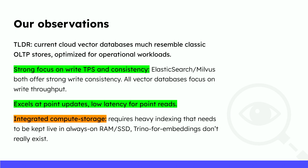Our observation is that current vector databases are really much like classic OLTP stores. They have a strong focus on high write transactions per second — you can dump thousands or millions of vectors into these databases really quickly and query them immediately. They have strong consistency guarantees and are very good at point updates and point reads. If you have a generative AI use case and have an embedding you want to look up, Pinecone can do that in 10 milliseconds, which is great. But what's not great is that this tightly integrates compute and storage. Pinecone and some other vector databases keep all your vector data always live on RAM or SSD to power this really quick point read, which gets really expensive when you have billions or trillions of historical vector embeddings that you might want to store in a data lake.